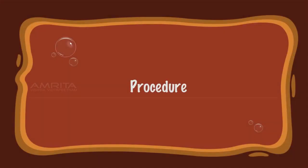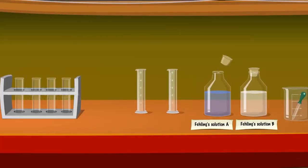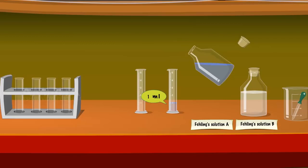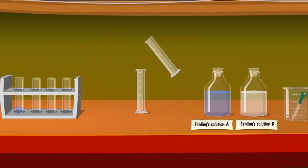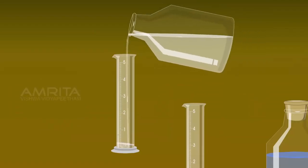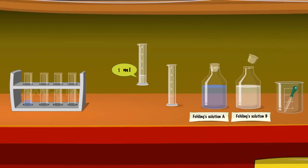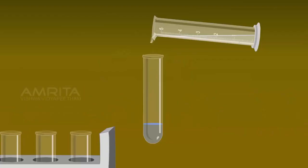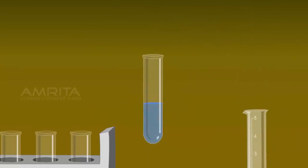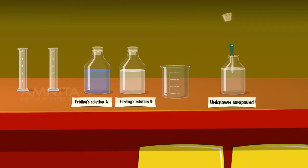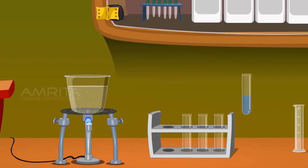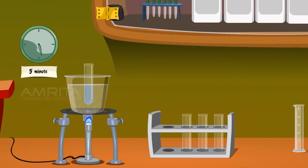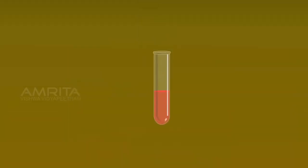Fehling's test. Procedure: Take 1 ml of Fehling's solution A in a measuring jar and pour it into a test tube. Take 1 ml of Fehling's solution B in a measuring jar and add it to the test tube. Add 4-5 drops of the given solution into the test tube using a dropper. Warm the test tube in a water bath for 5 minutes. Aldehydes reduce the Cu²⁺ ions in the test reagent to a red precipitate of copper oxide.